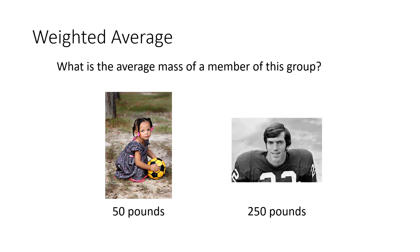As an example of a weighted average, I'd like to calculate the average mass of a member of a group. Let's say we're putting together a group of people that consists of little kids that each weigh about 50 pounds and football players who each weigh about 250 pounds. If we have a 50-50 mix, half weigh 50 pounds and half weigh 250 pounds, we can calculate this average by taking 50 plus 250, which is 300, and dividing by 2, which gives us 150.